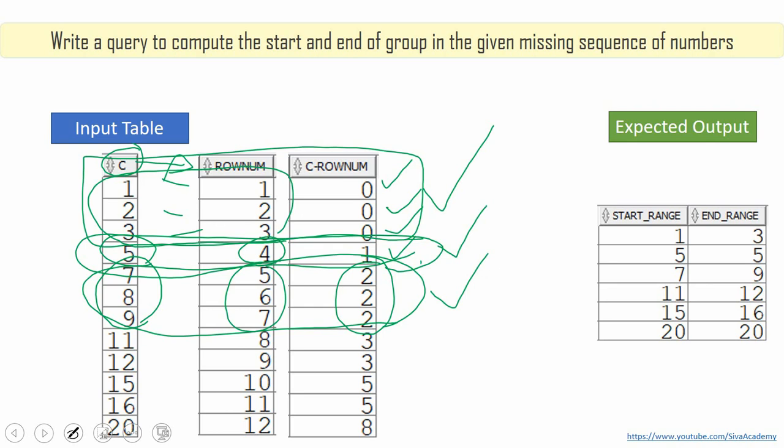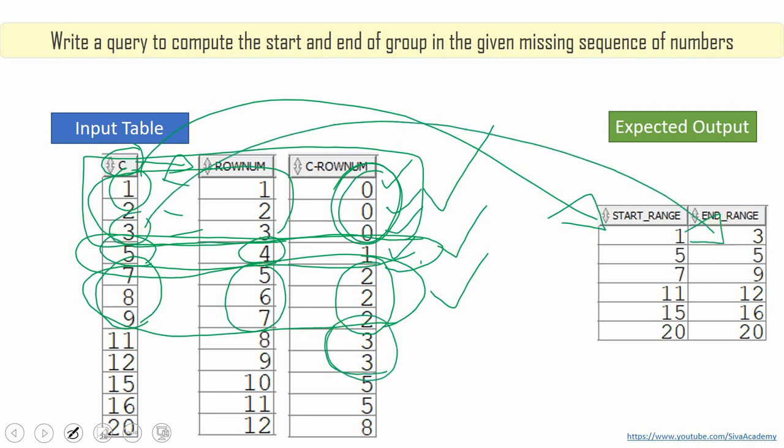So once we form the group, it is very much easy for us to find the minimum value of that group and the maximum value of that group. So it's very simple. It's just an aggregation. We need to use the minimum and maximum group function to just get the minimum value. For example, in this case, within group 0, 1 is the minimum value. We just need to print 3 is the maximum value. Similarly, let's say within group 3, 11 is the minimum value. Same way 12 is the maximum value. So this is what we are going to get.